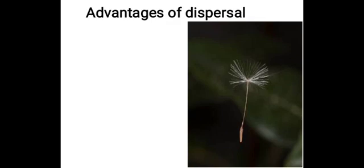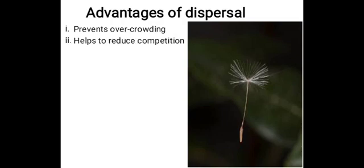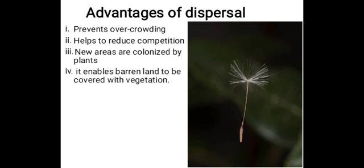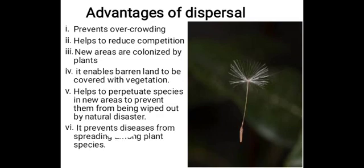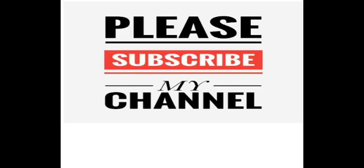The advantages of dispersal are: number one, it prevents overcrowding; number two, it helps to reduce competition; number three, new areas are colonized by plants; number four, it enables barren land to be covered with vegetation; number five, it helps to perpetuate species in new areas to prevent them from being wiped out by natural disaster; and number six, it prevents diseases from spreading among plant species.